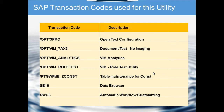The next one that is always used is /opt/vim analytics. This is for reporting, as covered extensively in previous tutorials. This is the place where all end users can check the vendor status, payment status, why an invoice is not paid, where it is stuck, and everything related.